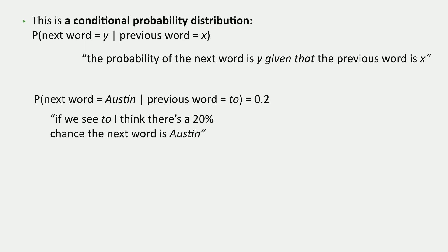So an example of this is I could say the probability of the next word equals Austin given the previous word equals to is 0.2. And what that's saying is from a predictive text standpoint, if we see to, I think there's a 20% chance that the next word is Austin. And I just made up this probability. We're going to talk about where these come from in a minute.